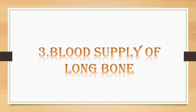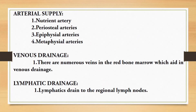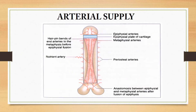Third question: blood supply of long bone. The arterial supply of long bones is provided by the nutrient artery, periosteal arteries, epiphysial arteries, and metaphysial arteries. For venous drainage, there are numerous veins in the red bone marrow which aid in venous drainage. Lymphatics drain to the regional limb nodes. After writing, you can draw this diagram to demonstrate the arterial supply of long bones.